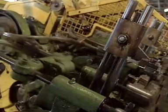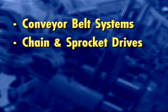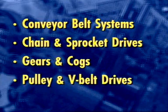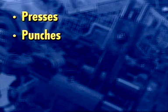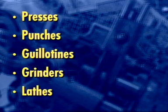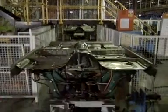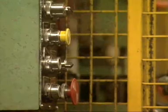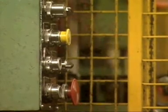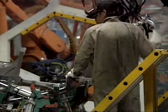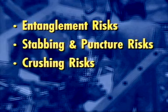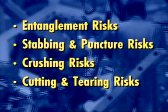Mechanical hazards exist wherever equipment and machinery is in use. Conveyor belt systems, chain and sprocket drives, gears and cogs, pulley and V-belt drives, presses, punches, guillotines, grinders, lathes and so on are all examples. The risks associated with mechanical hazards vary according to the equipment and the level of hazard exposure. Risks can be categorised as: entanglement risks, stabbing and puncture risks, crushing risks, and cutting and tearing risks.